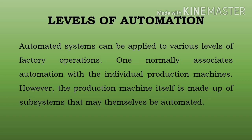Yaani ki, ek toh samanya individual production machine ke saath automation ko associate karte hain. Halaaki, production machine apne aap mein subsystem mein bana hota hai jo ki apne aap hi automate hota hai. Jaise example lete hain CNC machine — ek modern CNC machine tool highly automated system hota hai jo ki multiple control systems se composed hota hai. Inhe levels of automation se samajhna hai, toh example lete hain.